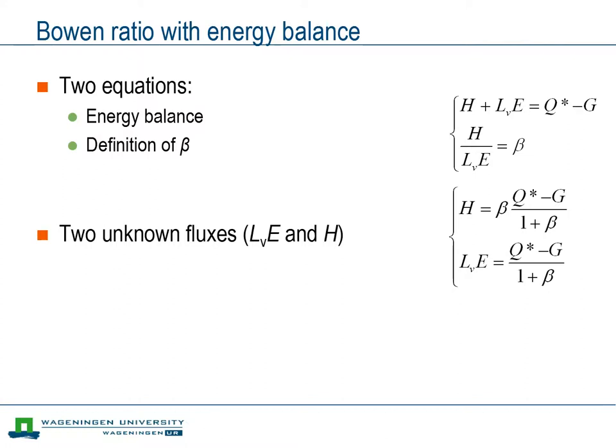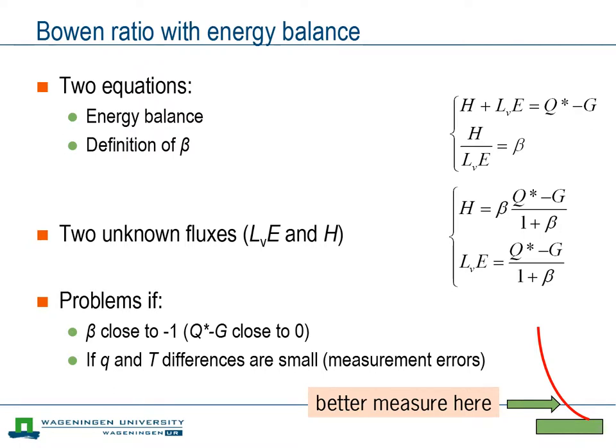In practice, some problems may occur. First, if the Bowen ratio is close to minus 1, the denominator approaches 0 and hence the resulting flux is undefined. A Bowen ratio close to minus 1 implies that the available energy, that is net radiation minus soil flux, is close to 0.